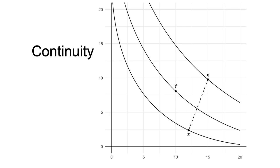On the diagram are three bundles, x, y and z, and each sits on a different indifference curve. The indifference curve that x is on is higher than that of y, which is higher than that of z.